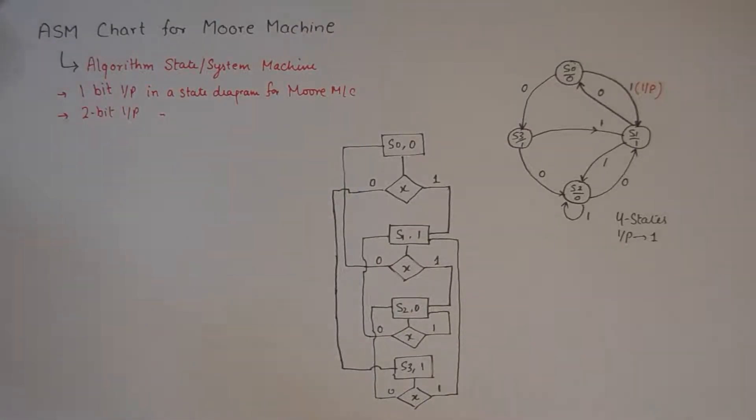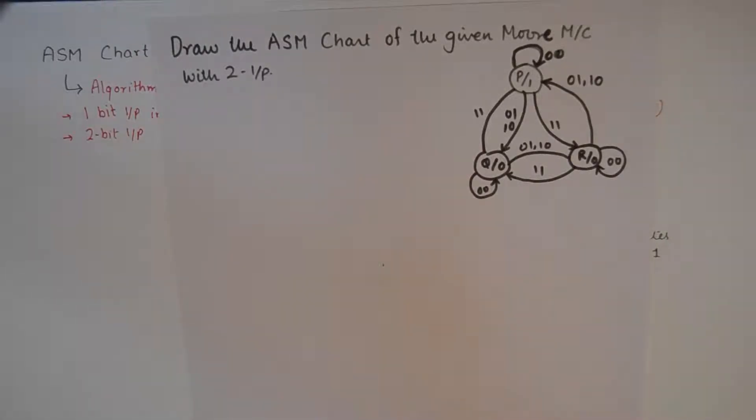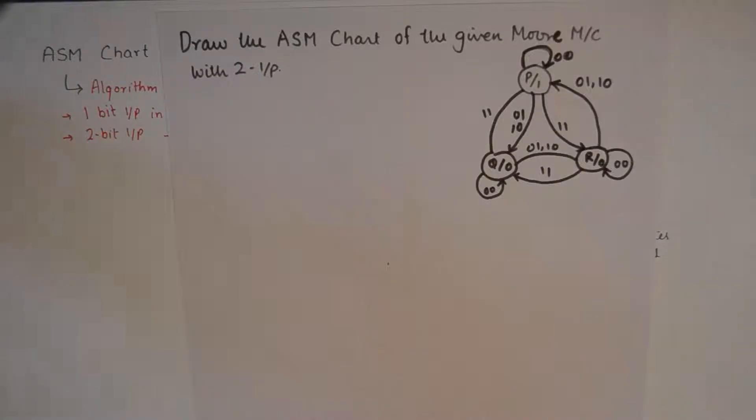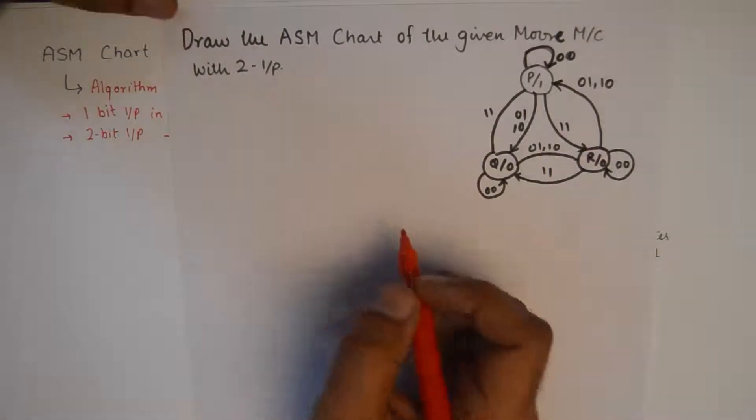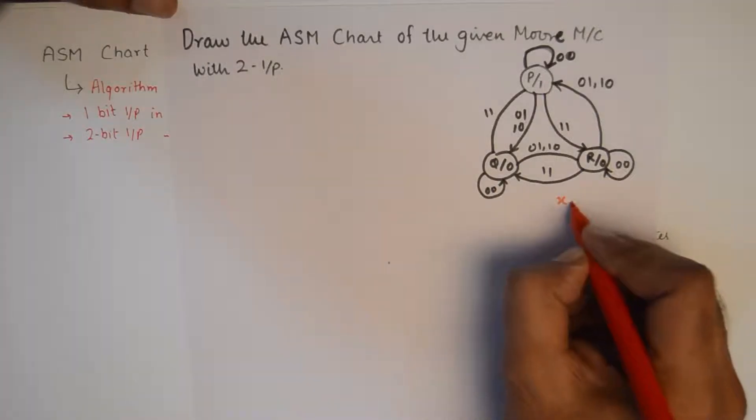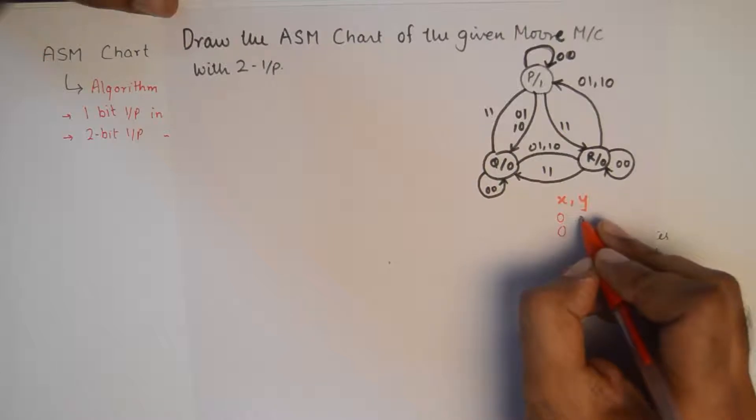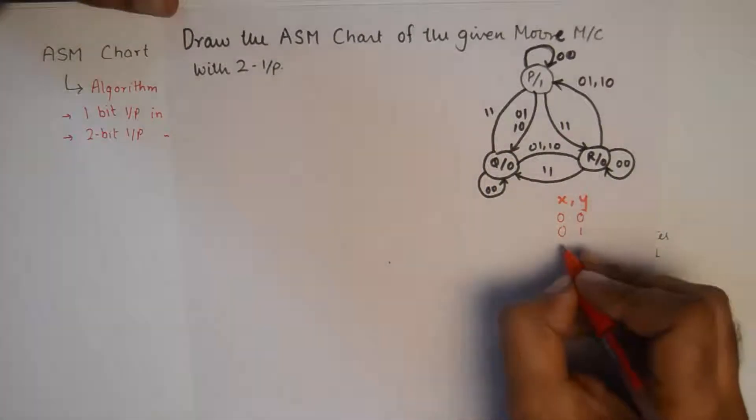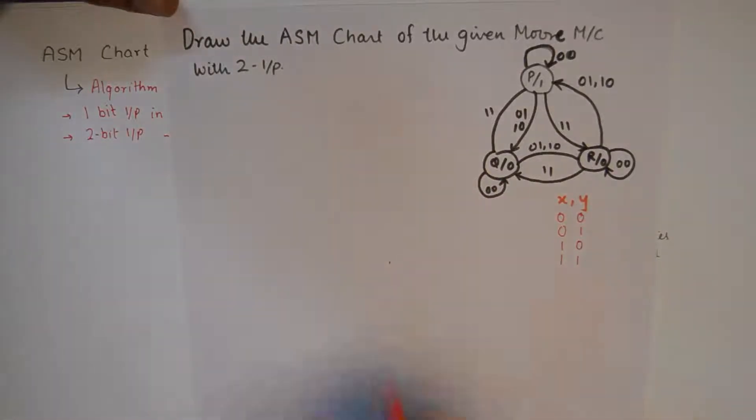Now I'll take up an example of an ASM chart of a Moore machine with two inputs. We now take an example of a Moore machine with two inputs. In this state diagram we have three states, and now I'll illustrate the process of taking care of two inputs using three decision boxes. What happens is for two inputs x and y, we need to take care of the fact that when the value of x is 0, we can encounter either a 0 or a 1 at y, and when the value of x is 1, we can again encounter a 0 or a 1 at y.